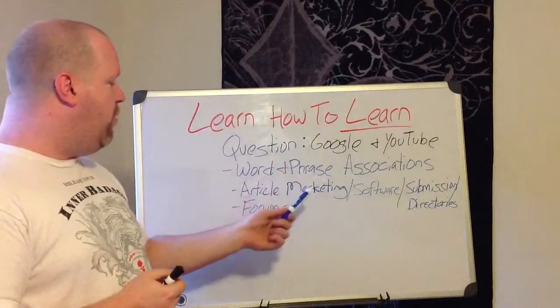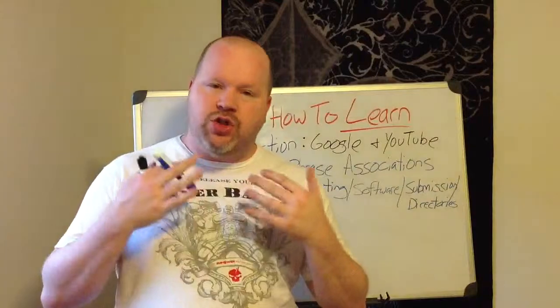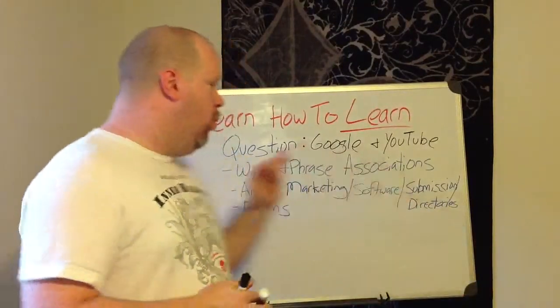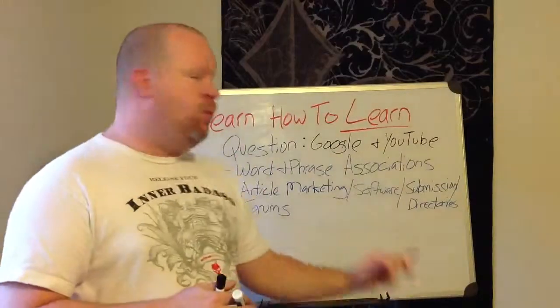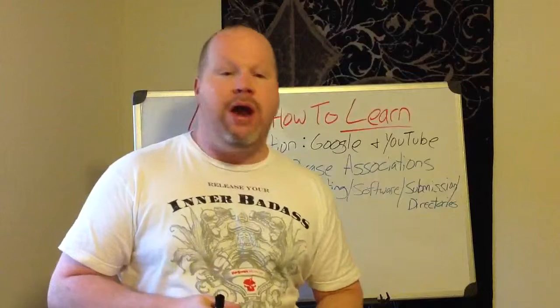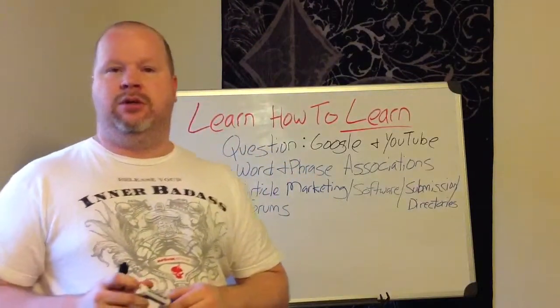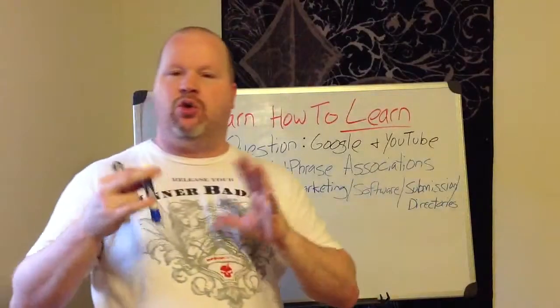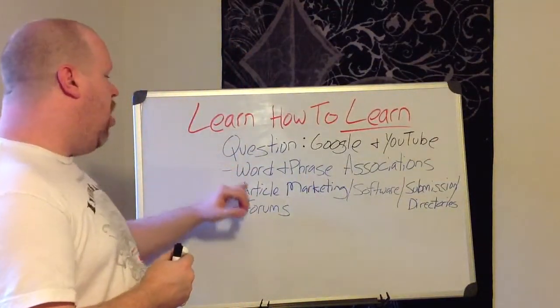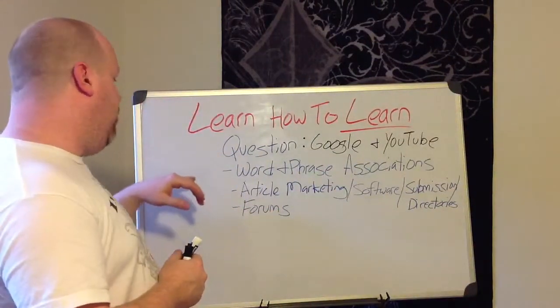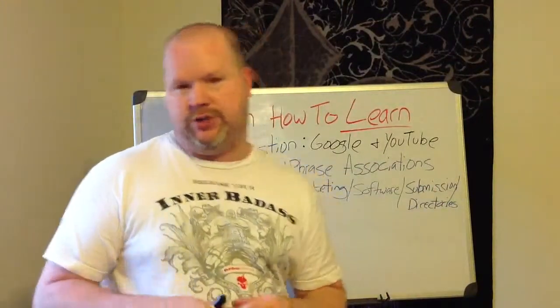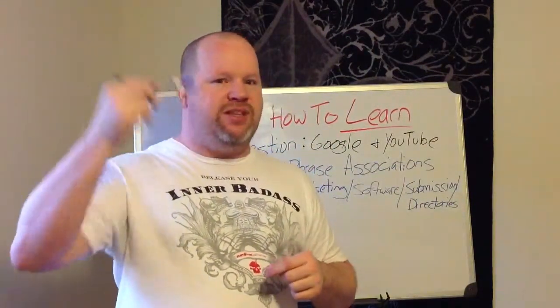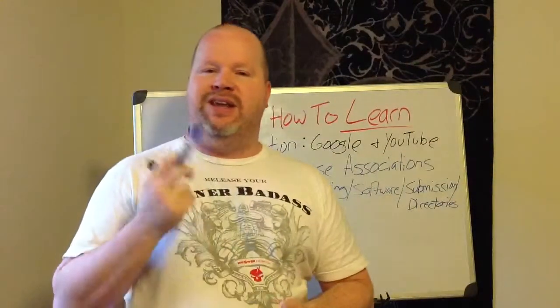It's very powerful to allow Google to help you. It's also an option to ask a question directly word for word: what is article marketing, what is article submission, what is article directories, where are, how, how many, the best, top. Start thinking of words that you can start associating with your question. What is the best article marketing software? Where are one of the top article marketing directories? Article directories, article submission services, ratings, reviews. Really start to think about all these different types of words that you can connect with the initial search.